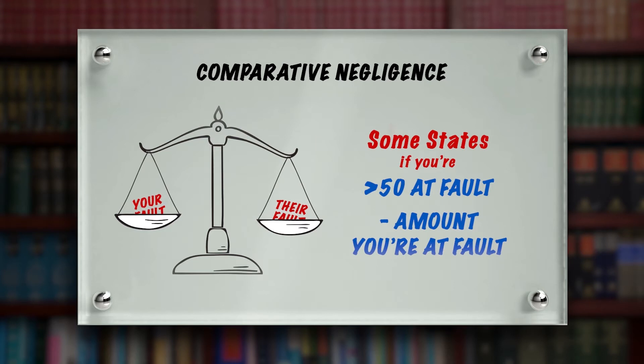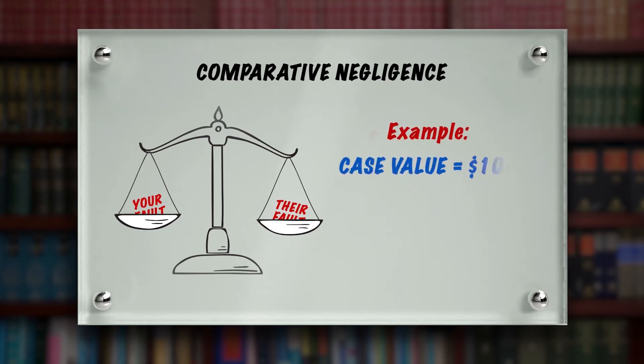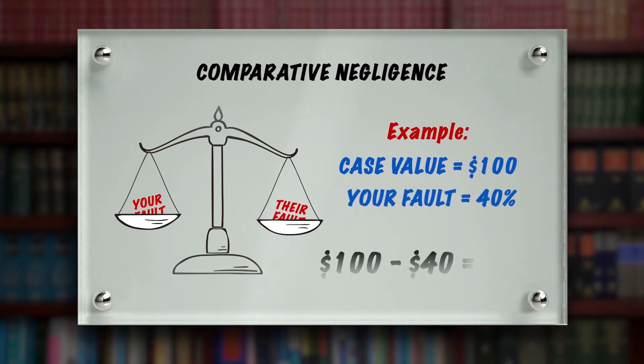So if the value of your case were $100 — just hypothetically — and you were 40% at fault, the court would reduce that $100 to $60. They would reduce it by the 40% that you were at fault.